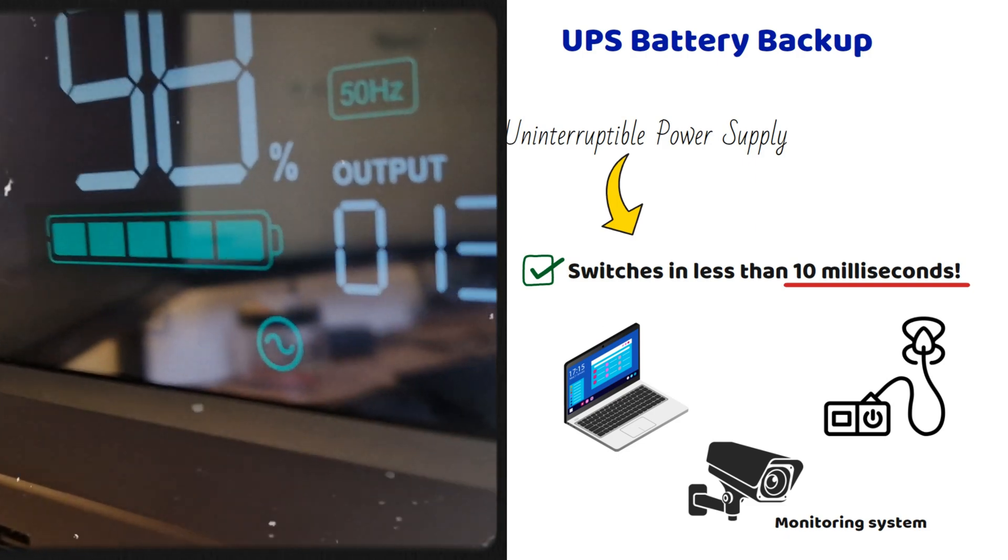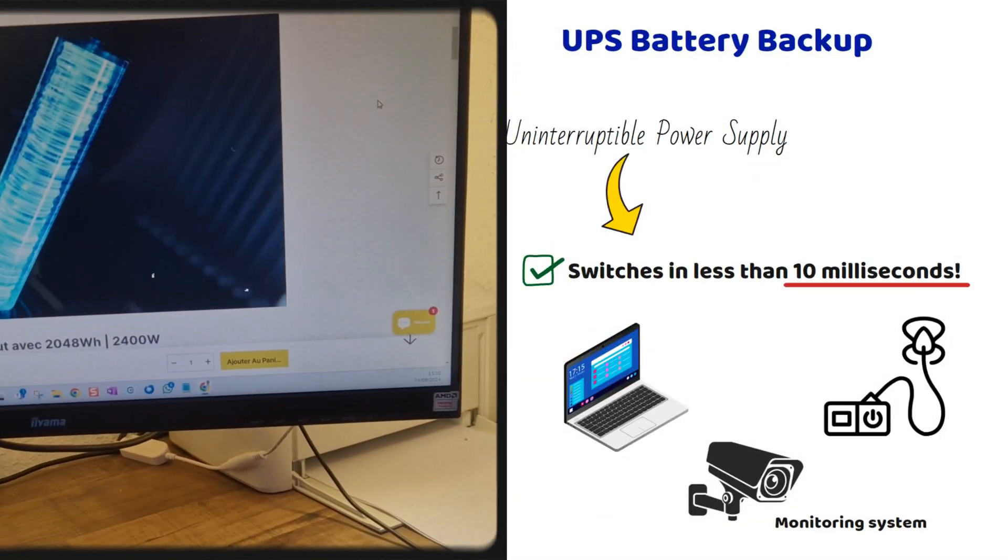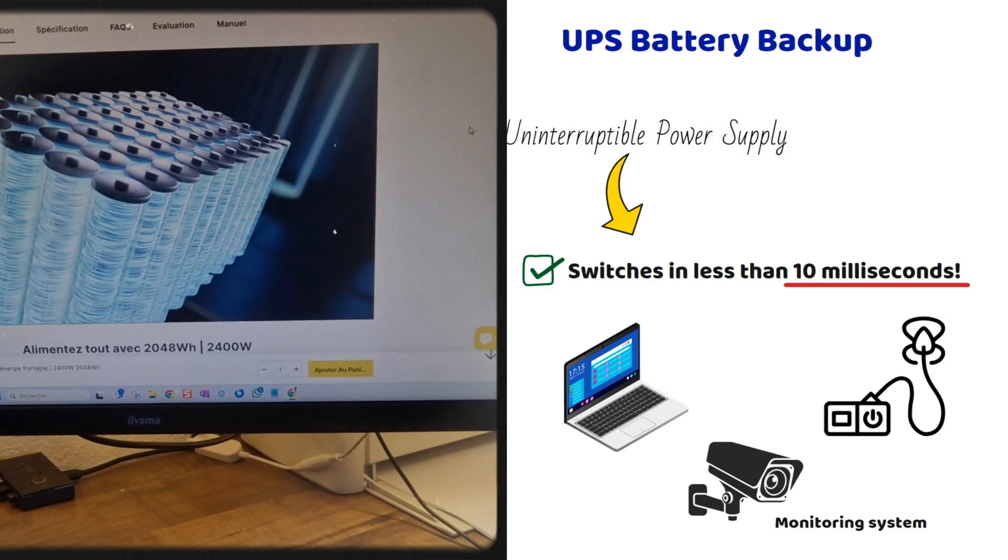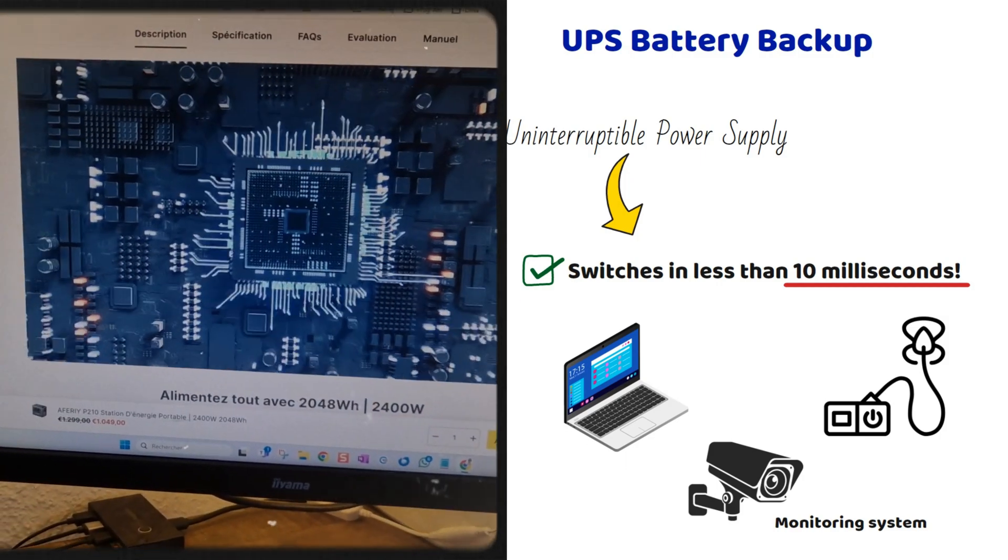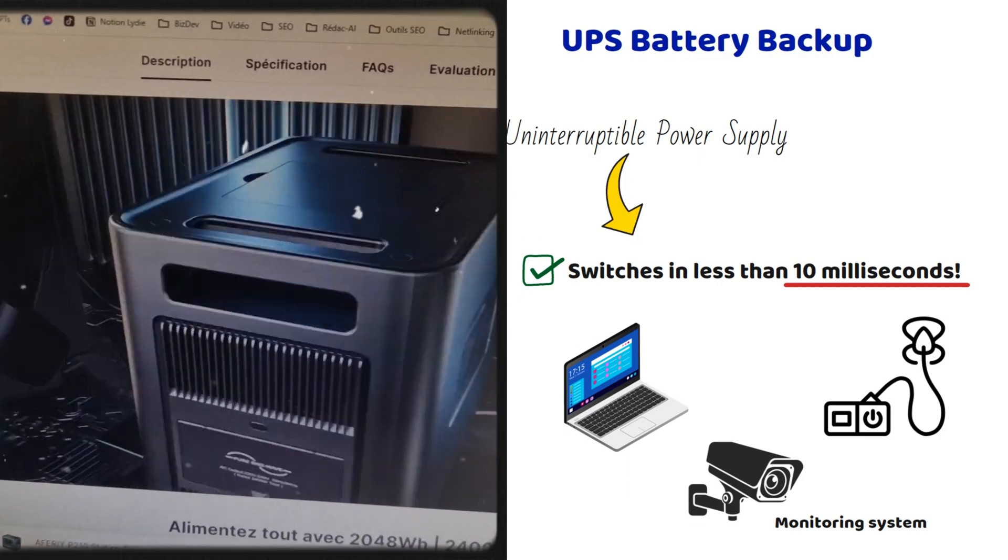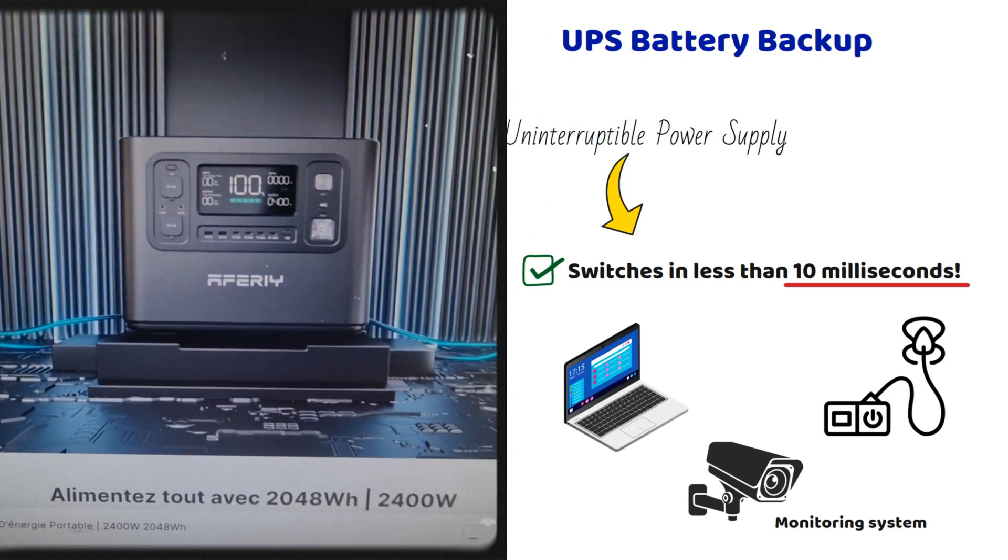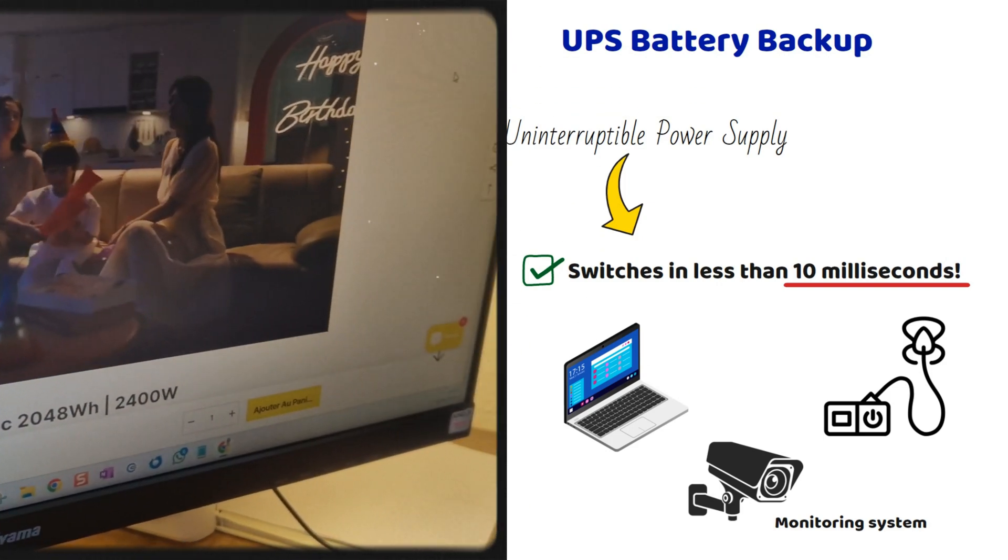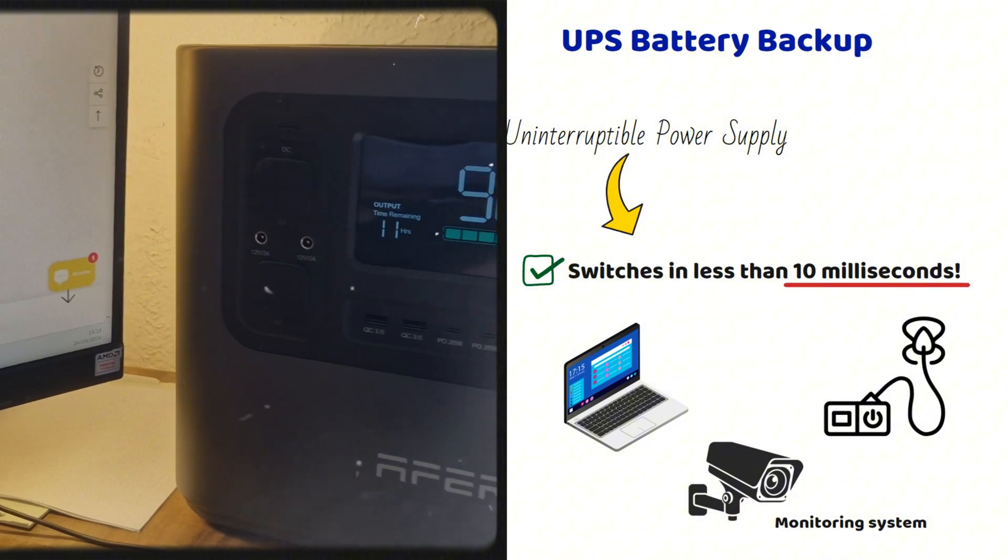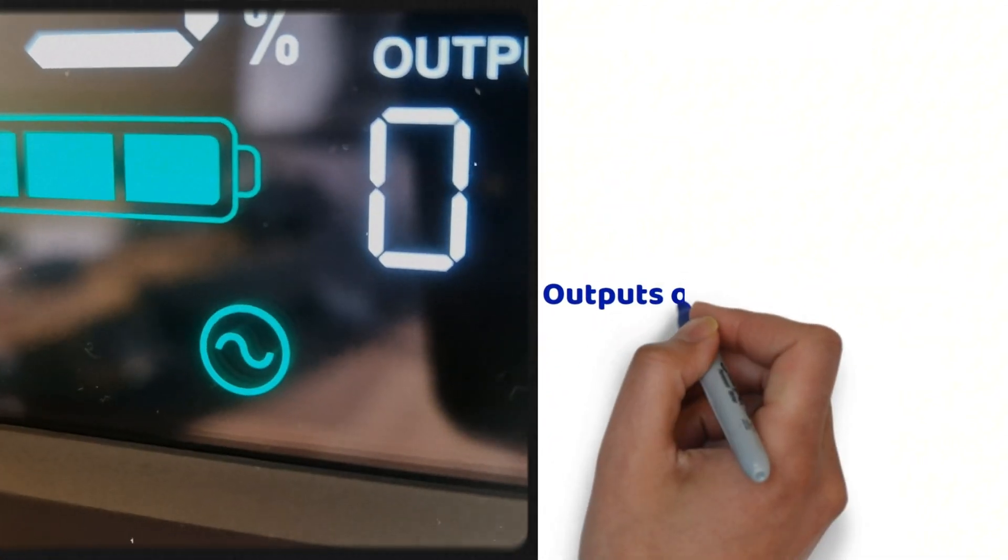For example, I have a desktop PC with dual screens and my internet box connected to a traditional UPS with an integrated lead acid battery, which gives me 5-10 minutes of autonomy during a power outage. With this station, it not only handles power outage detection, but also provides the advantage of lasting several hours, instead of just a few minutes. I found that really impressive.